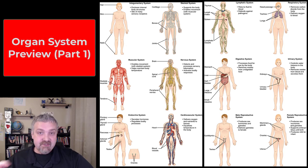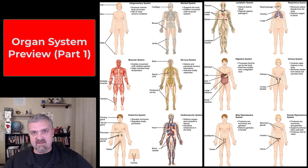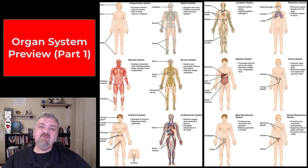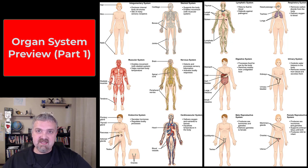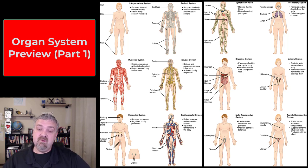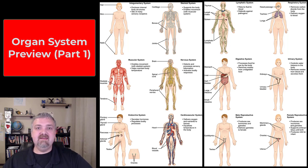Hey everybody, Dr. O here. In these two videos, we're going to do a quick preview of all 11 organ systems. The first thing you might notice is there are 12 systems on the screen, because we're going to separate the male and female reproductive systems since they're so different. I'm going to cover the first four organ systems in AMP1, and then the remaining ones in part two, which will be covered in AMP2.